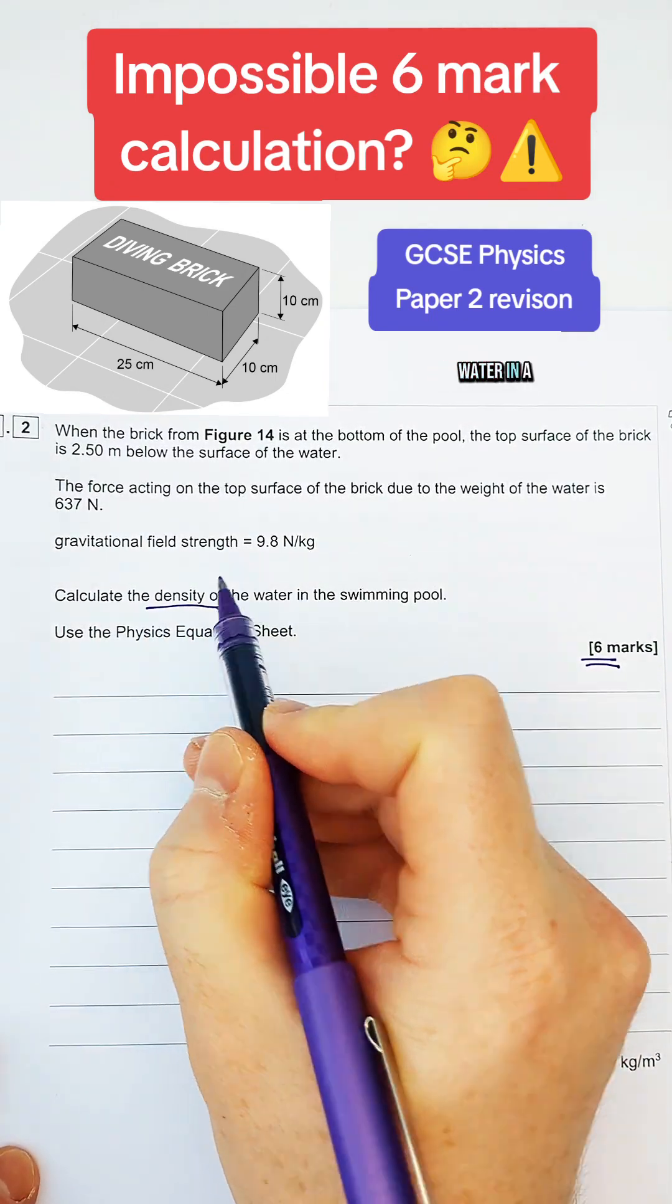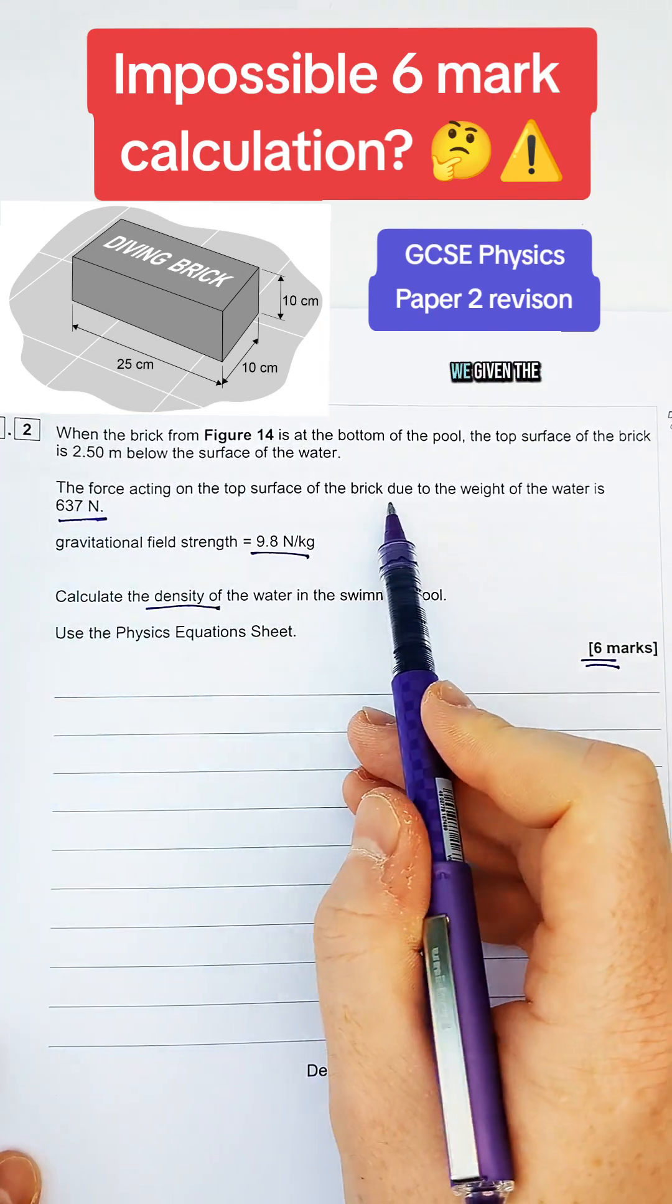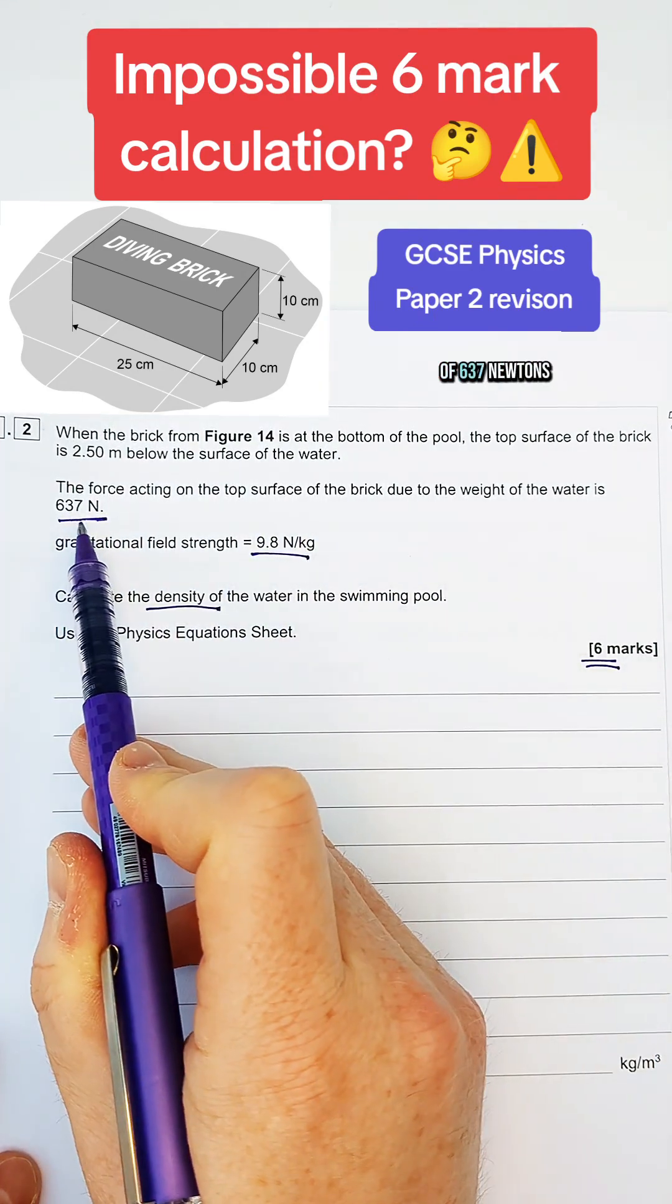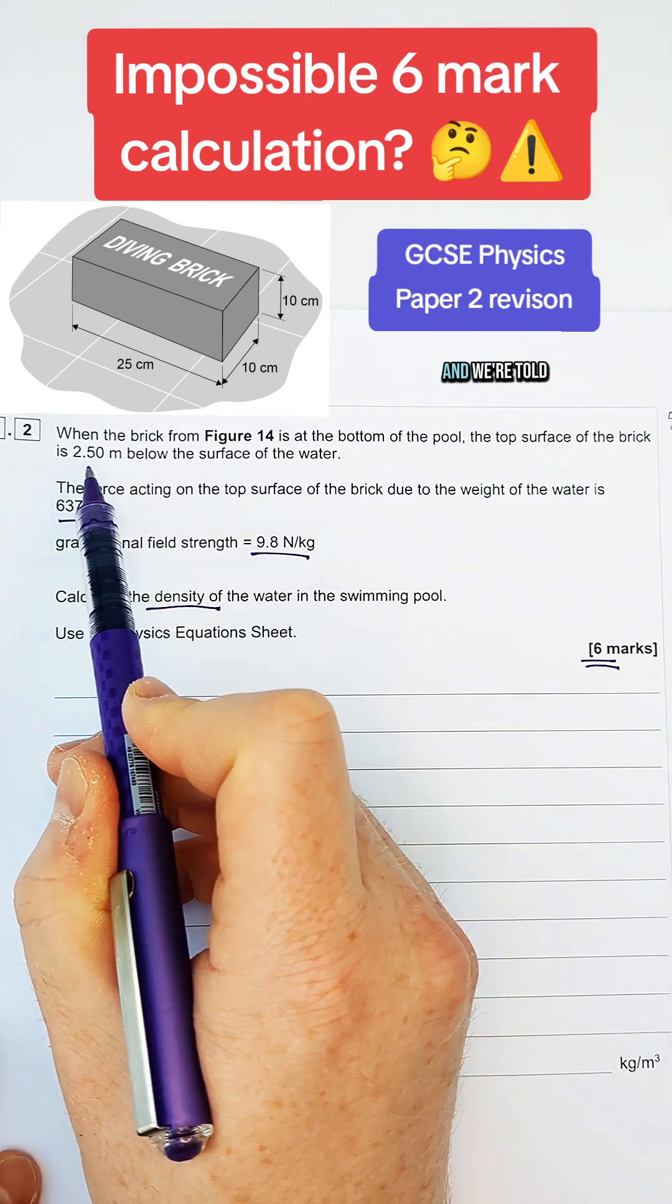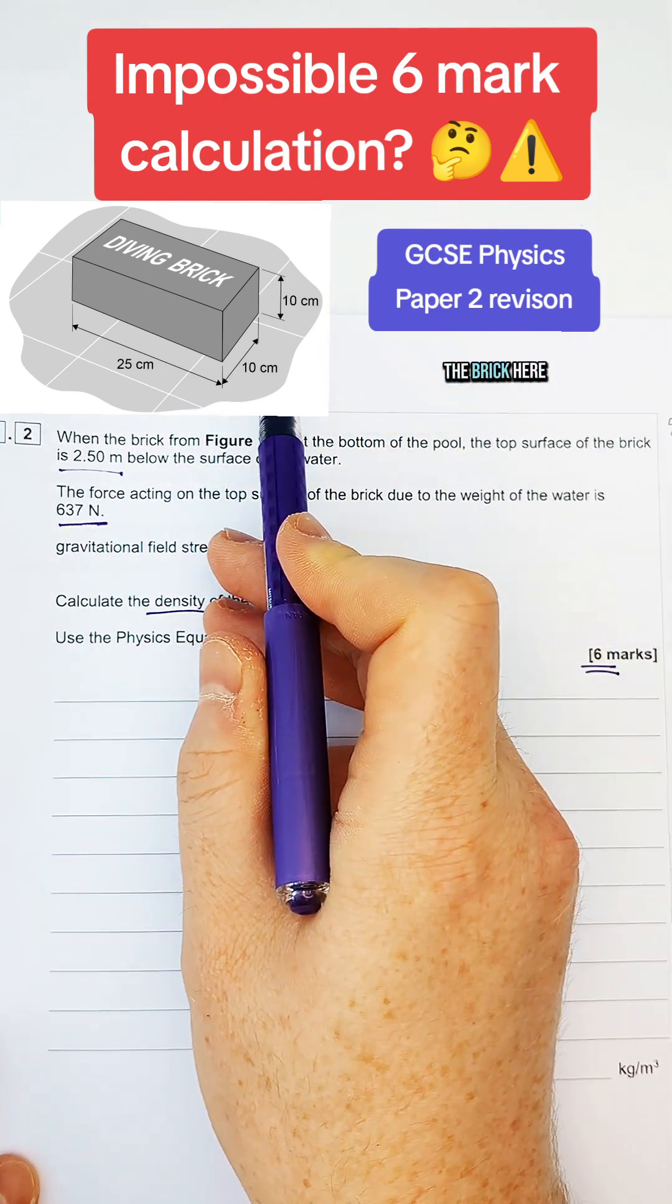We're looking for the density of water in a pool. We've been given the gravitational field strength, and for this brick, we're given the weight above it of 637 newtons. We're told that it's 2.5 metres below the water, and we have the dimensions of the brick here.